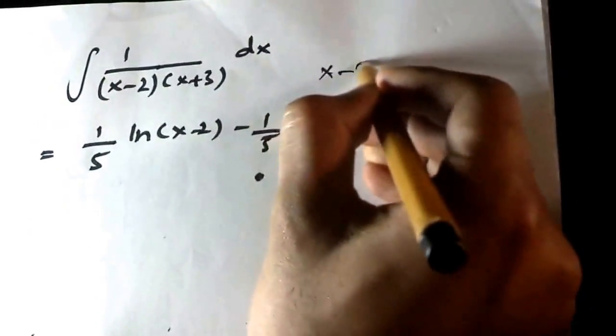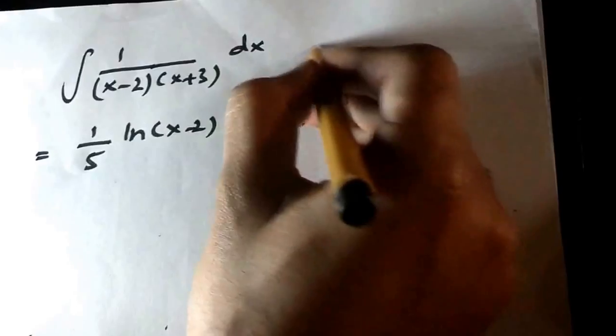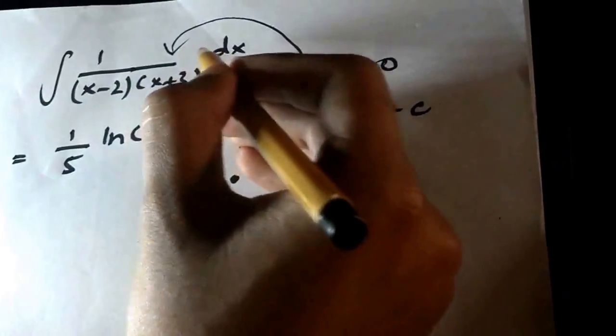I simply took x minus 2 equals to 0 then x is equal to 2 in my mind and put it in the original equation to solve it for the coefficient.